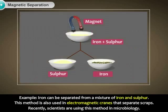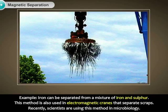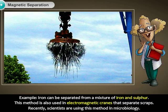Example: Iron can be separated from a mixture of iron and sulfur. However, this method is also used in electromagnetic cranes that separate scraps. Recently, scientists are using this method in microbiology.